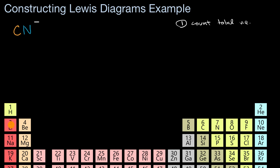You might already know that carbon has one, two, three, four valence electrons in that second shell. It's in the second period. Nitrogen has one, two, three, four, five valence electrons in its second shell. So the valence electrons from a neutral carbon and a neutral nitrogen free atom would be a total of nine valence electrons.